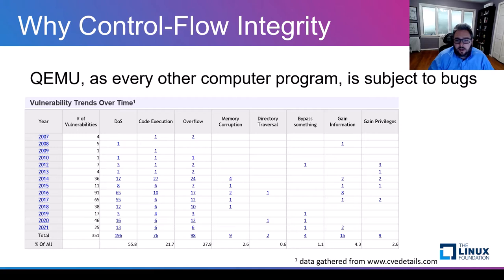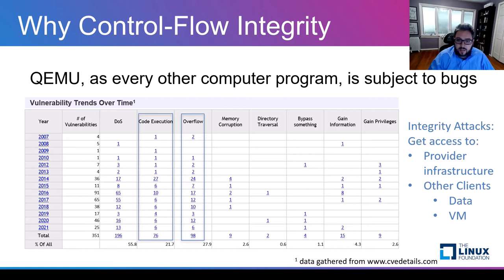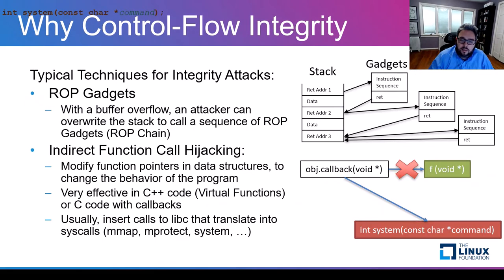As cloud providers, we are mostly interested in integrity attacks because with those, an attacker can gain access to the provider infrastructure or even worse, to data of other clients. The main two ways an attacker can cause an integrity attack is by using ROP gadgets or indirect function call hijacking.